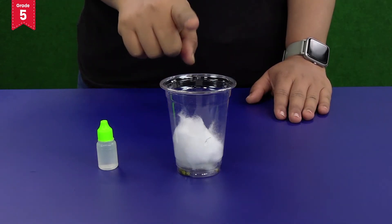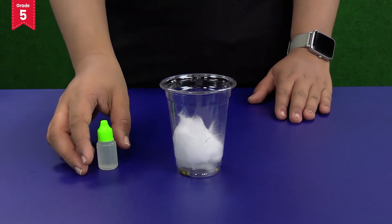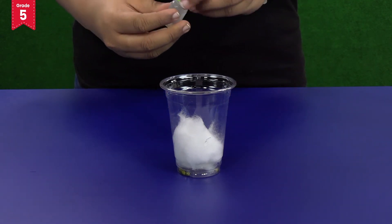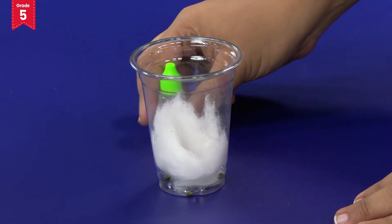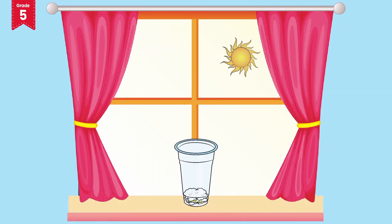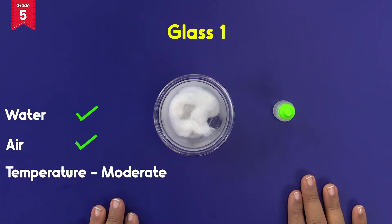Place glass 1 near a window which receives sunlight and add 5 to 6 drops of water every day for the next 5 days to keep the cotton moist. So, we are giving water, air and moderate temperature to the seeds in glass 1.